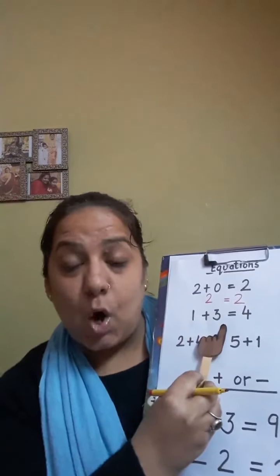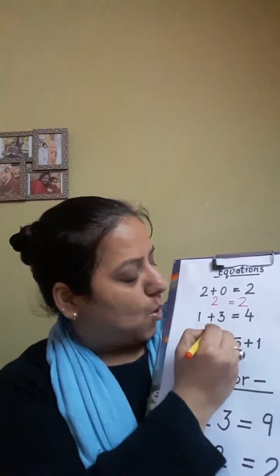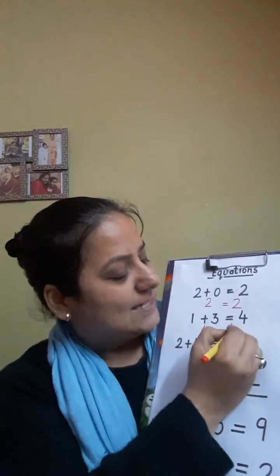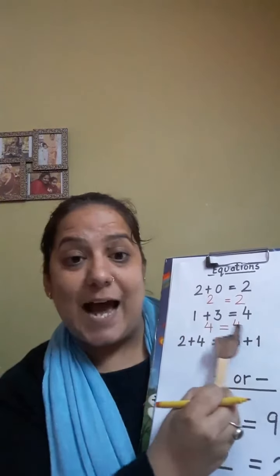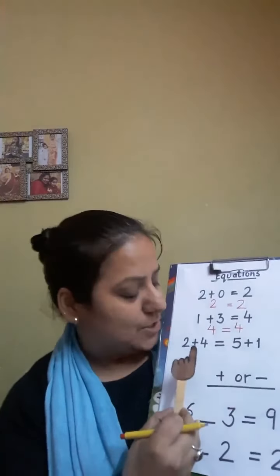1 plus 3. If we solve 1 plus 3, we get 4. And here, towards the right side, it's again 4. So it means both the sides have equal value. Let's see this equation.